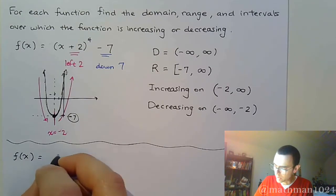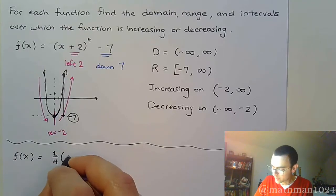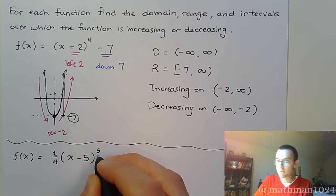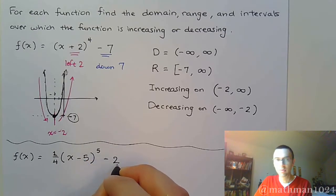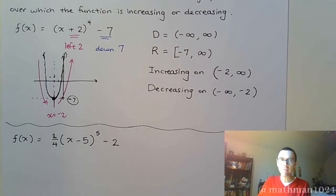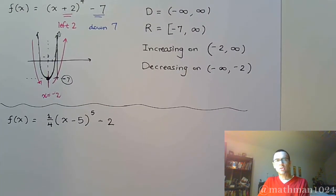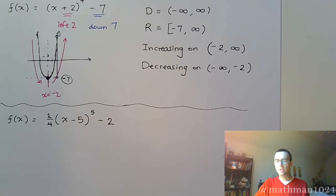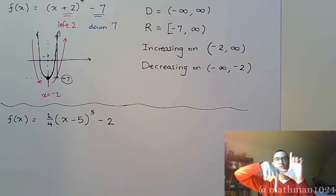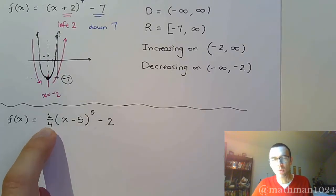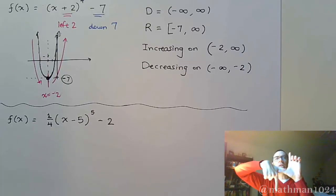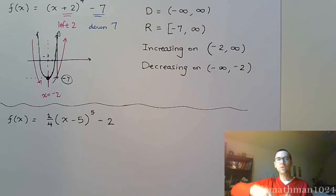The next example is one-fourth times the quantity x minus 5 to the fifth power minus 2. Some things to point out: you have a power of 5, which means it's an odd degree, so it's going to look like a cactus shape. Look at that lead coefficient — one-fourth — it's positive, so the end behavior is still going down on the left and going up on the right.